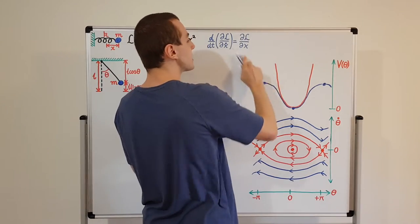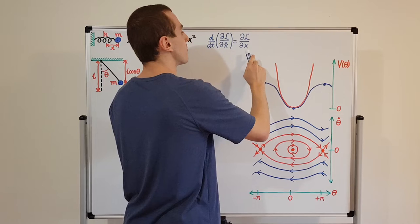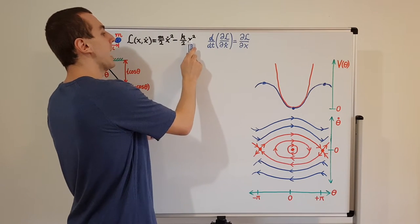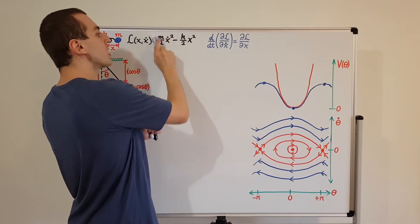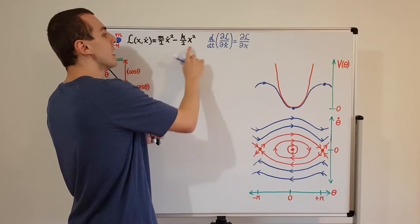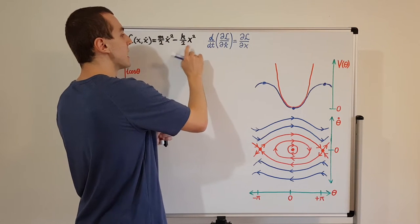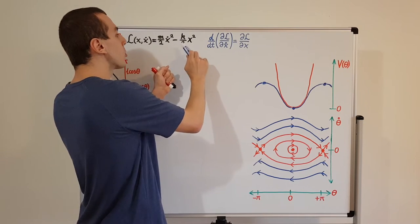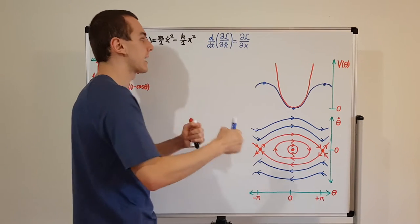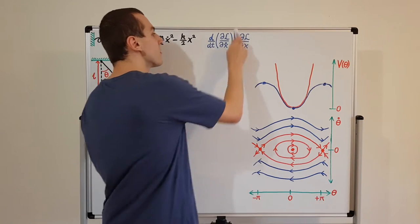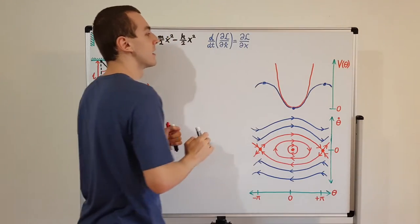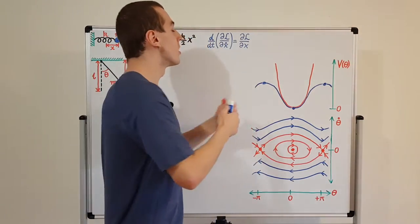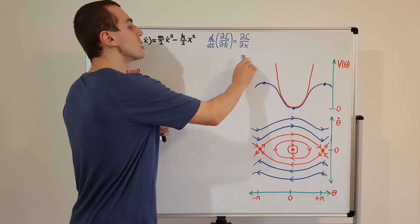On the right-hand side, we differentiate the Lagrangian with respect to x. The kinetic energy term has no x, so we differentiate the potential term, picking up a minus sign. Using the power rule gives minus kx. So the force equals minus kx — that is Hooke's law, recovered from the Euler-Lagrange equation.